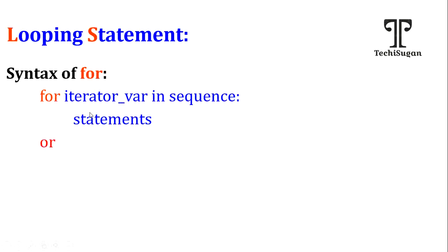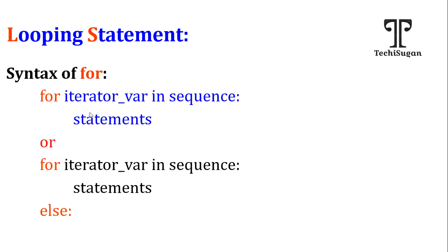There is one more syntax — you can write an else part for your for loop. For iterable_variable in sequence, followed by the statements of your for loop, then else. If the condition becomes false, I want certain other code to be executed, which I will write in the else part. This else is not mandatory — it is optional.